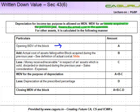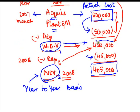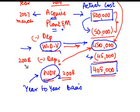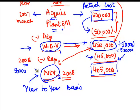You take the opening written down value of the block of asset, then add the actual cost of assets falling within the block that were acquired during the previous year. For example, if in 2008 I acquired another plant and machinery for 50,000, I would add that 50,000 to the 4 lakh 50,000, taking it back to 5 lakh, and then charge depreciation at 10% on this amount.